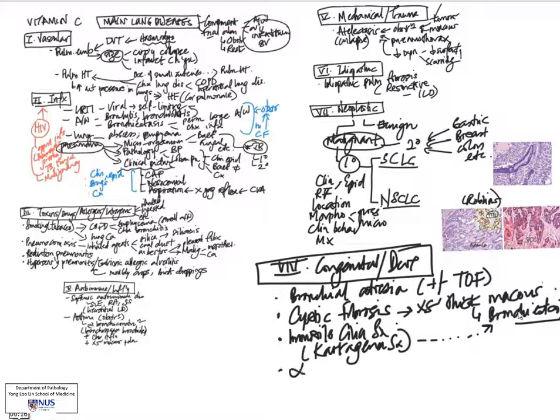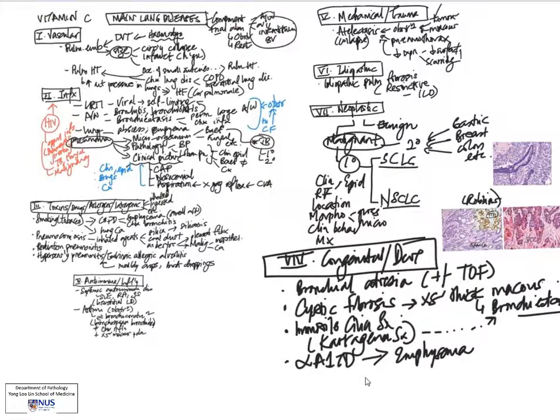Alpha-1 antitrypsin deficiency is a condition that predisposes to emphysema because of the imbalance between proteinases as well as their inhibitors. Alpha-1 antitrypsin is actually a proteinase inhibitor. You can read more about the pathogenesis of alpha-1 antitrypsin deficiency-related emphysema in Robbins. This essentially is one of the chronic obstructive pulmonary diseases. Remember, another cause also would be smoking, as we talked about under the category of toxins.